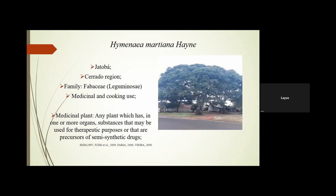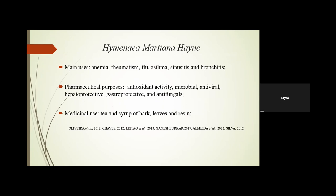Hymenaea martiana Hayne, known as jatoba, is a plant from the Cerrado region. The family is Fabaceae, and it is a medicinal plant that can be used for medicinal and cooking purposes. A medicinal plant is any plant which has in one or more organs a substance that may be used for therapeutic purposes or that are producers of semi-synthetic drugs. Specifically, this plant has the main uses for anemia, vitamins, asthma, sinusitis, and bronchitis. For pharmaceutical purposes, it can be used as an antioxidant, antimicrobial, antiviral, hepatoprotective, gastroprotective, and antifungal.